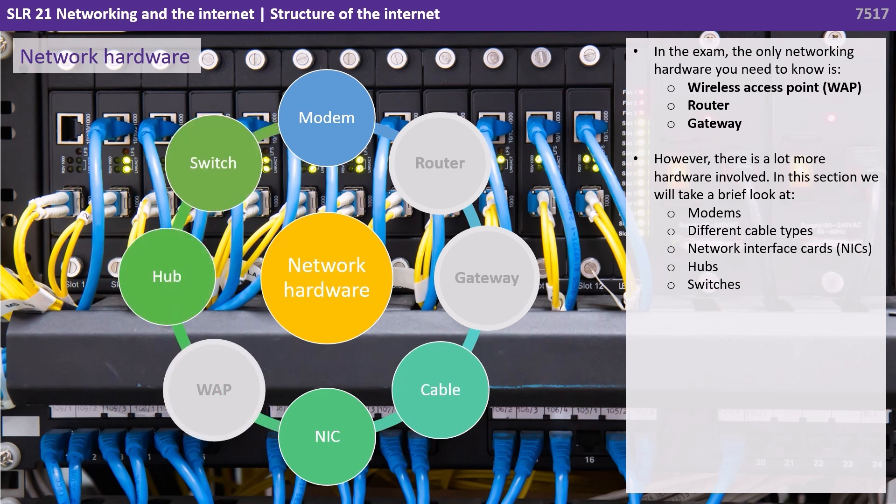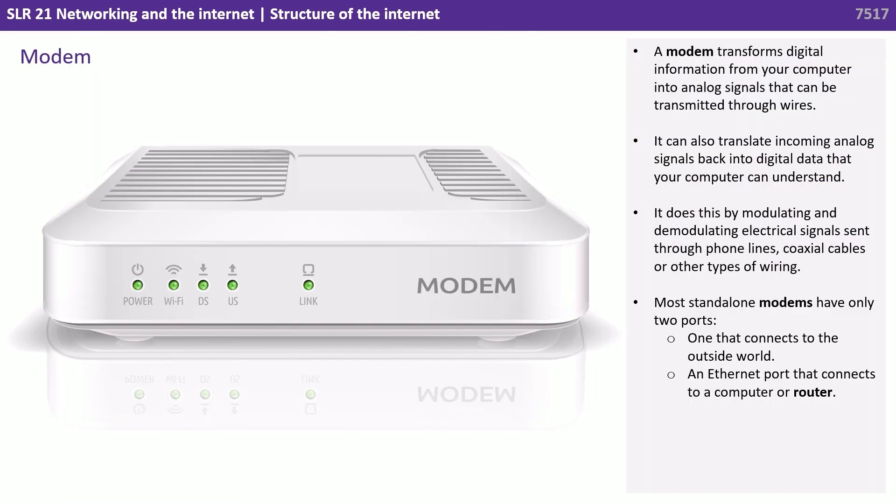However, there's a lot more hardware involved. We'll take a brief look at modems, different cable types, network interface cards, hubs and switches. A modem transforms digital information from your computer into analog signals that can be transmitted through wires. It can also translate incoming analog signals back into digital data that your computer can understand. It does this by modulating and demodulating electrical signals sent through phone lines, cables and other types of wiring.